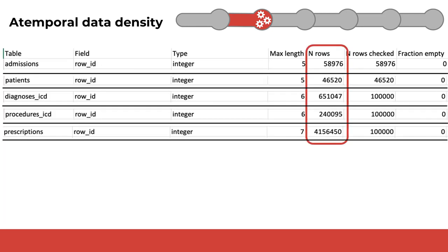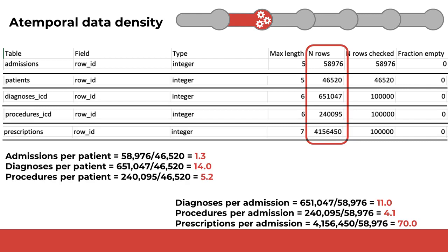Here you can see the atemporal density values for five MIMIC tables: admissions, patients, diagnosis ICD, procedures ICD, and prescriptions. Below this table are various calculated ratios, which are not provided by White Rabbit but were calculated manually by me. The left triplet of ratios is based on a per-patient denominator. The right triplet of ratios is based on a per-admission denominator. Notice that there are more admissions, 58,976, than there are patients, 46,520.